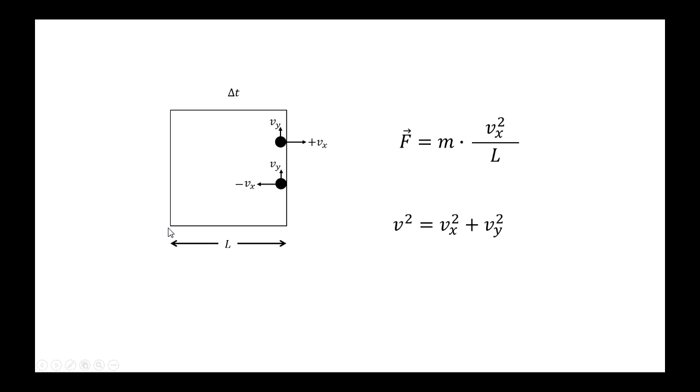But the third dimension is the z dimension, which is going into the screen that you're looking at and out of the screen that you're looking at. How does that change the equation? If you add a third dimension, you just have to add vz squared as well, the z component of velocity.